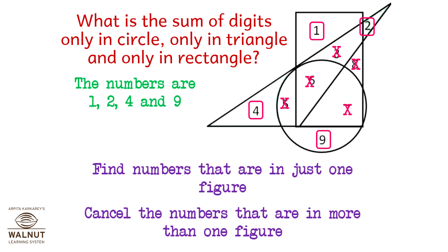What is the sum for the rectangle? There is only one digit in the rectangle which is 1, so the sum of the digits is 1 for the rectangle. What about the triangle? There are two digits in the triangle: 4 and 2 — we add to get 6. So the total sum is 1 plus 9 plus 6, which is 16.